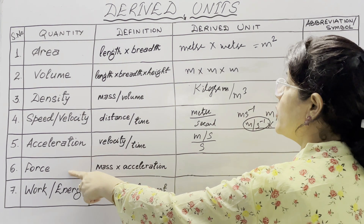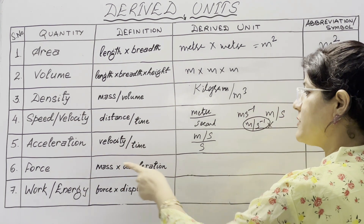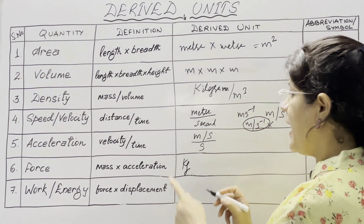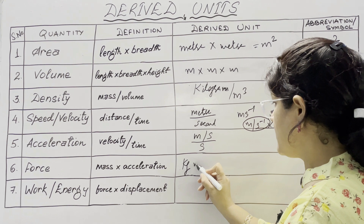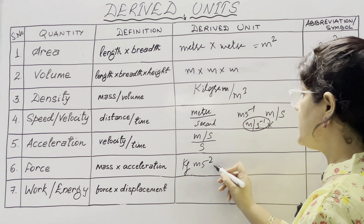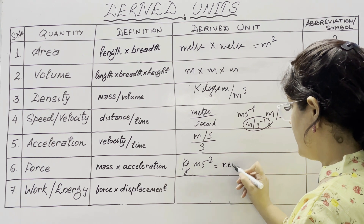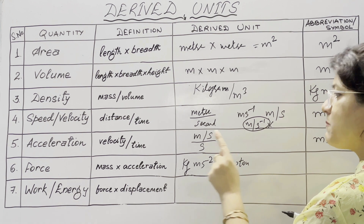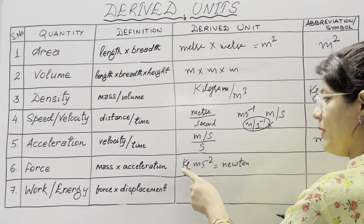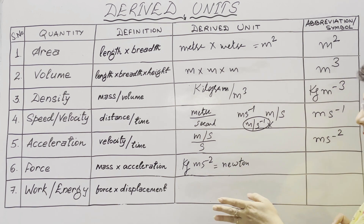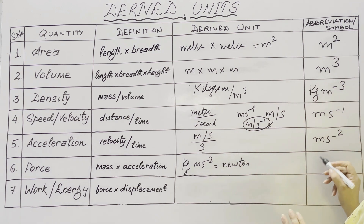The next important physical quantity is force, and its definition is mass into acceleration. The SI unit of mass is kg and acceleration is meter per second square. Its SI unit is newton. Force is said to be 1 newton when it produces an acceleration of 1 meter per second square in a body of mass 1 kg. You can write it as capital N or the full word newton.